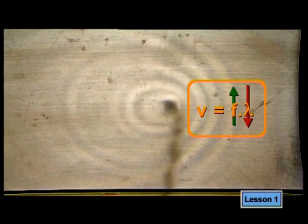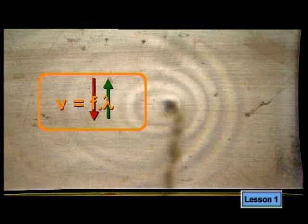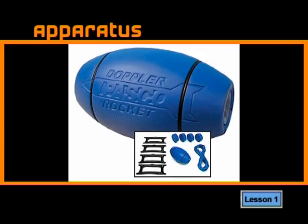Where the wavelength of the water waves in front of the moving source decreased, the frequency increased. And where the wavelength increased behind the source, the frequency decreased. That was quite an interesting effect. Now let's see if the same thing applies to sound waves.